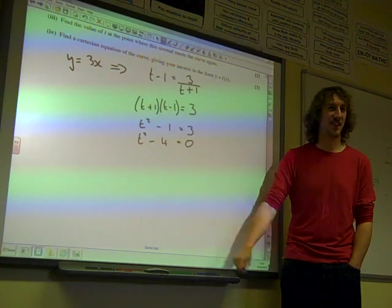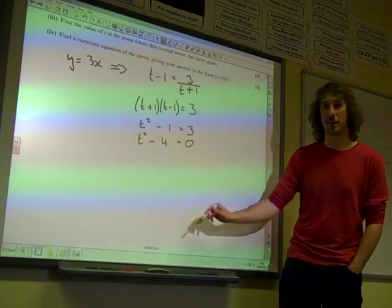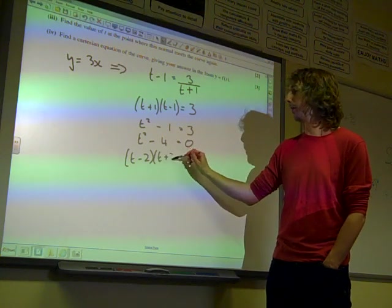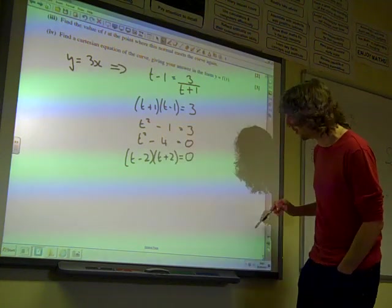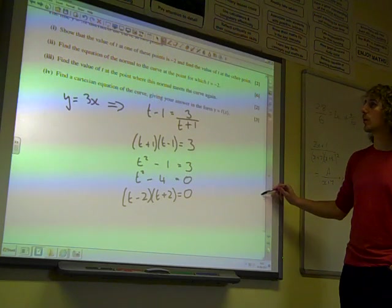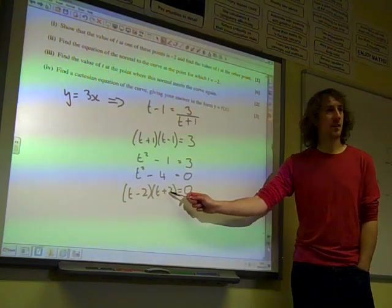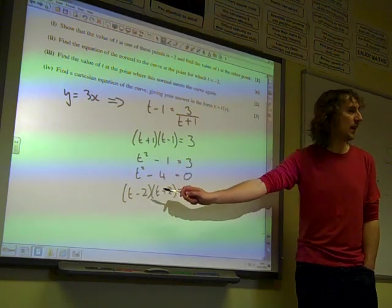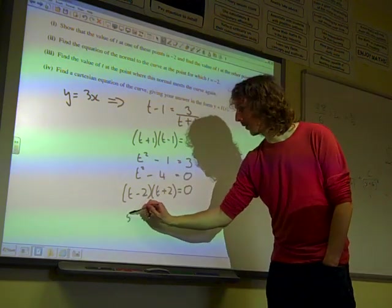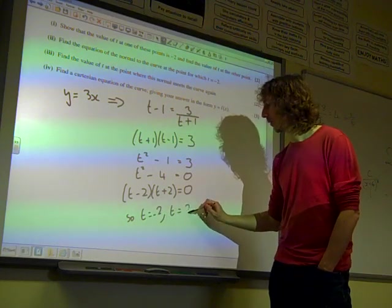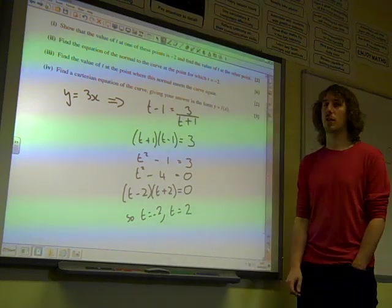Lovely, isn't it? Again, it factorizes as t minus 2, t plus 2, and there we are. Just as it said, t at one of these points is minus 2. There it is. So the other value of t is plus 2. There we go. Two marks.